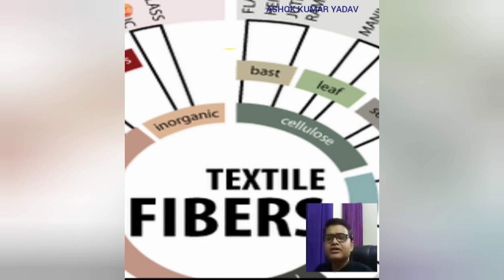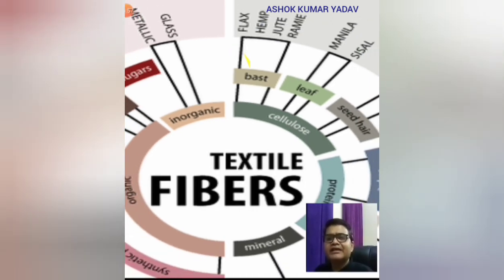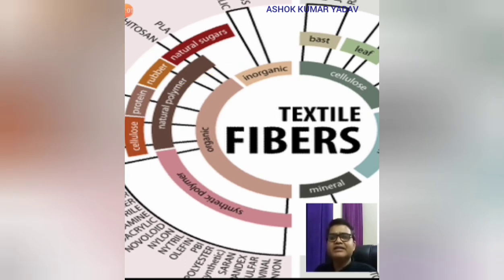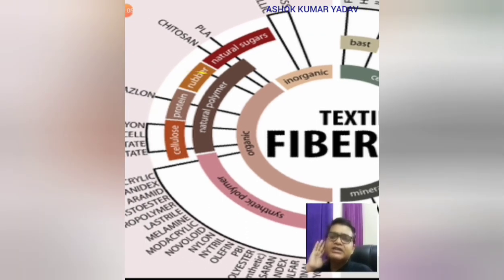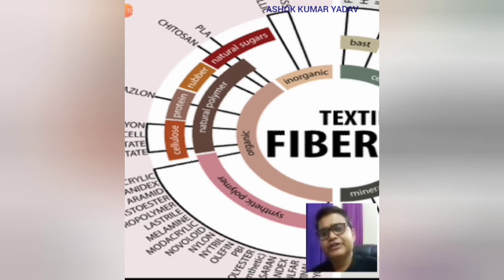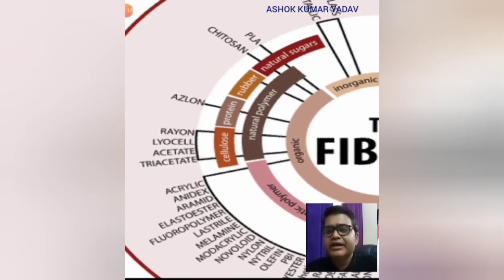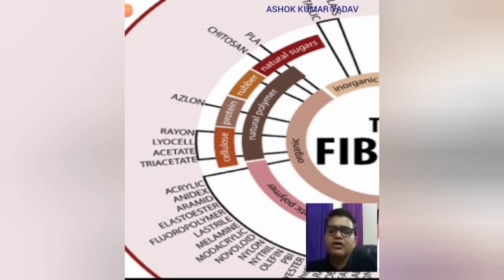Next is the inorganic source, like glass and metallics, and other natural fibers. From these different source fibers we get natural polymers like cellulose fibers, rayon, lyocell, acetate, and triacetate from various sources.